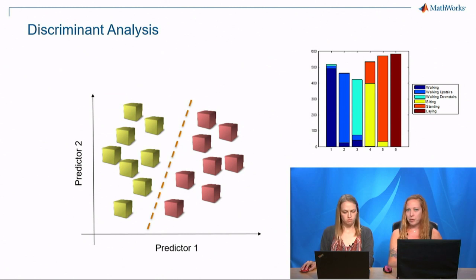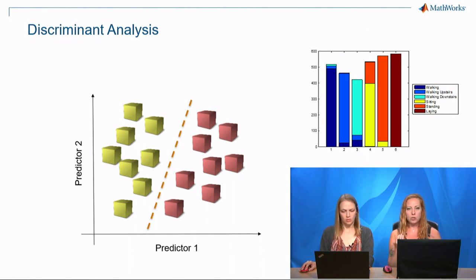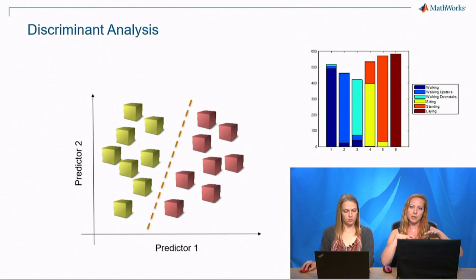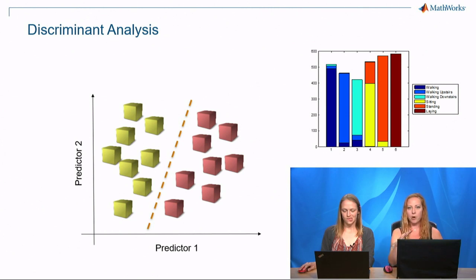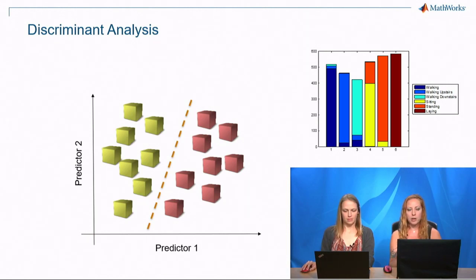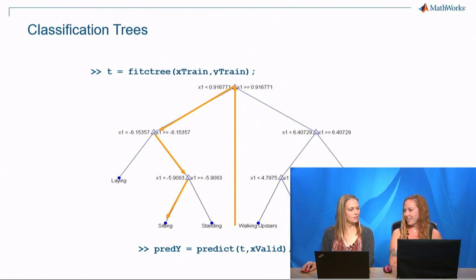Discriminant analysis is really similar to Naive Bayes in the way it handles assumptions and calculations. It assumes a multivariate normal distribution, class independent, and estimates differences between classes by looking at covariance matrices. The assumption is a linearly separable hyperplane — it's a hyperplane because it's n-dimensional. You can also use quadratic discriminant, so you don't have to stick strictly to linear. That does it for discriminant analysis.